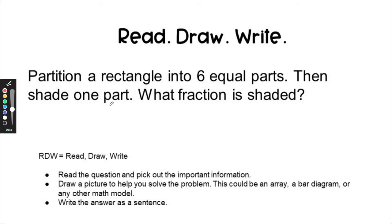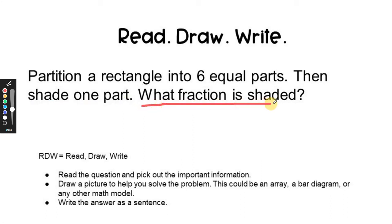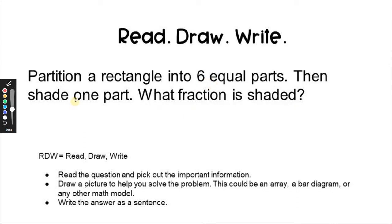It says: partition a rectangle into six equal parts. Then shade one part. And the question we want to answer is: what fraction is shaded? So first we're going to partition into six equal parts, and then we'll shade one part, and then we'll answer the question: what fraction is shaded?